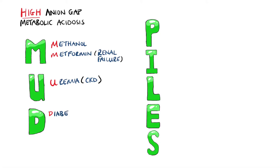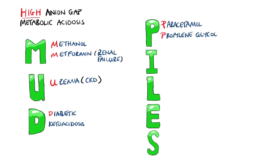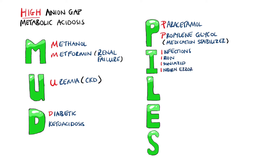Then we have D for diabetic ketoacidosis, and P for paracetamol and propylene glycol, which is a stabilizer in many medications. The I stands for infections, iron, and isoniazid, which can cause lactic acidosis in an overdose, as well as inborn errors of metabolism, which are more relevant in pediatric patients.